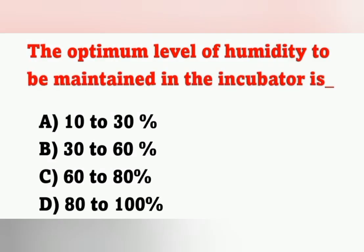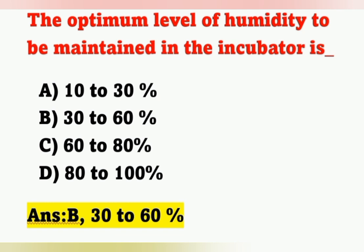Next question: The optimum level of humidity to be maintained in the incubator is: Option A: 10–30%; Option B: 30–60%; Option C: 60–80%; Option D: 80–100%. The correct answer is Option B — 30 to 60%. Here we discussed previous year and important questions. Surely these questions will guide you for your exams.